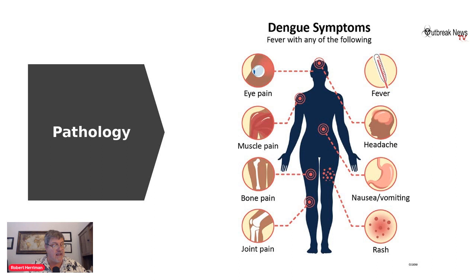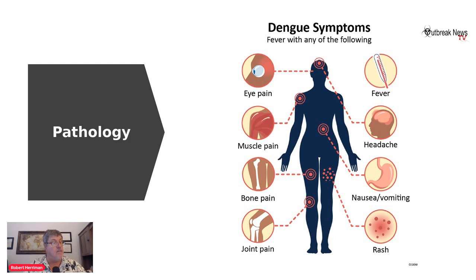Individuals infected for the second time are at greater risk of severe dengue. Severe dengue happens when blood vessels become damaged and leaky, and the number of clot-forming cells known as platelets drops, leading to shock, internal bleeding, organ failure, and even death. Warning signs of severe dengue — a life-threatening emergency — can develop very quickly, usually beginning a day or two after your fever goes away, and may include severe abdominal pain, persistent vomiting, rapid breathing, bleeding gums or nose, fatigue, restlessness, blood in the vomit or stool, being very thirsty, pale and cold skin, and feeling weak.